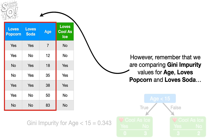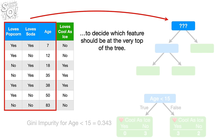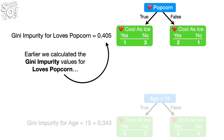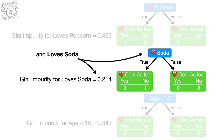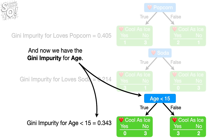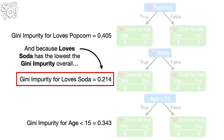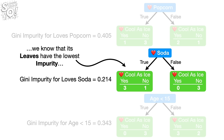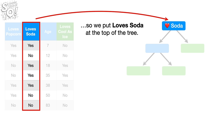Remember, we are comparing Gini impurity values for age, Loves Popcorn, and Loves Soda to decide which feature should be at the very top of the tree. We calculated Gini impurity 0.405 for Loves Popcorn, 0.214 for Loves Soda, and 0.343 for age. Because Loves Soda has the lowest Gini impurity overall — meaning its leaves have the lowest impurity — we put Loves Soda at the top of the tree.